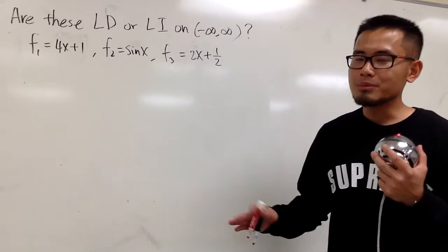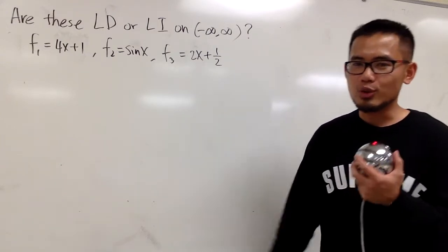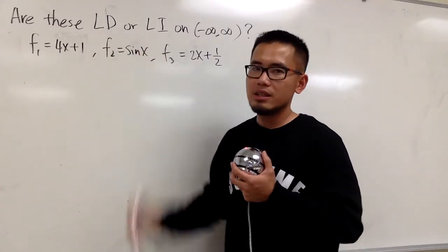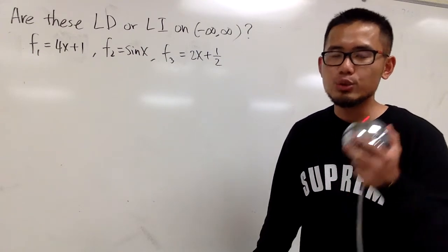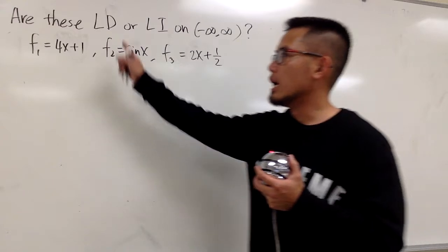But I don't have that theorem for you guys yet. I will just show you guys with the traditional way to do this, alright? I'm going to show you guys all these are LD. To do so, be sure you use the definition, the c1, c2, c3. Do not use the wrong skin to show LD, okay?